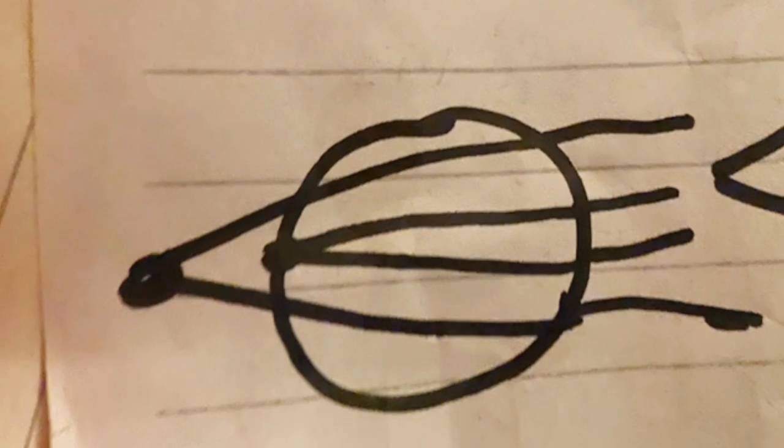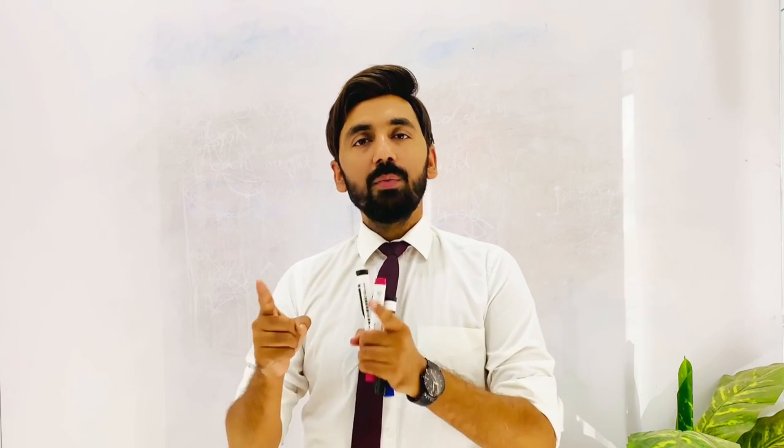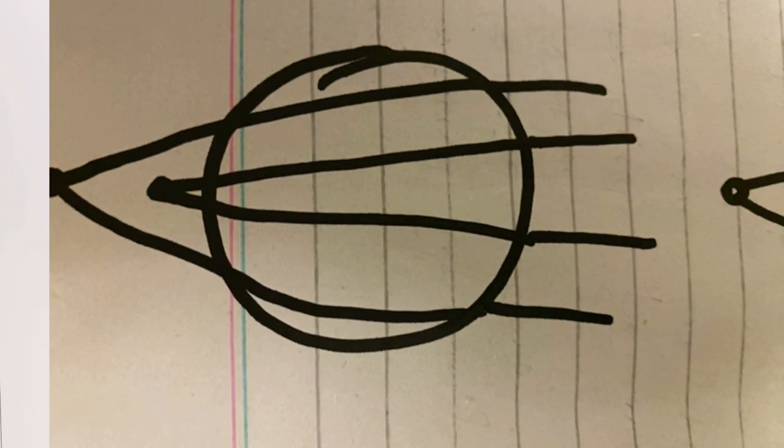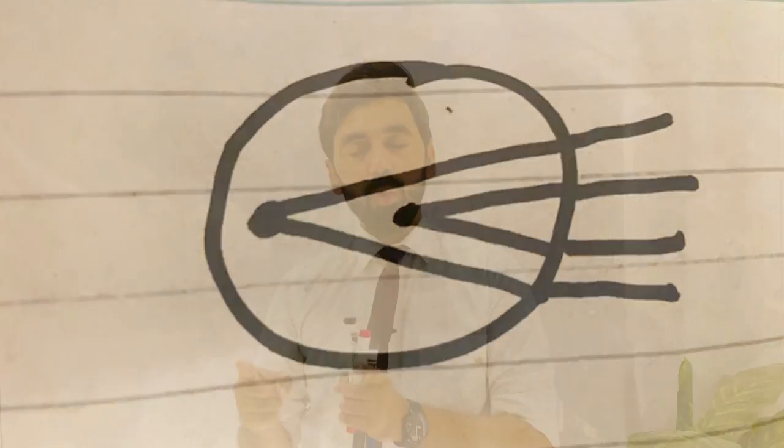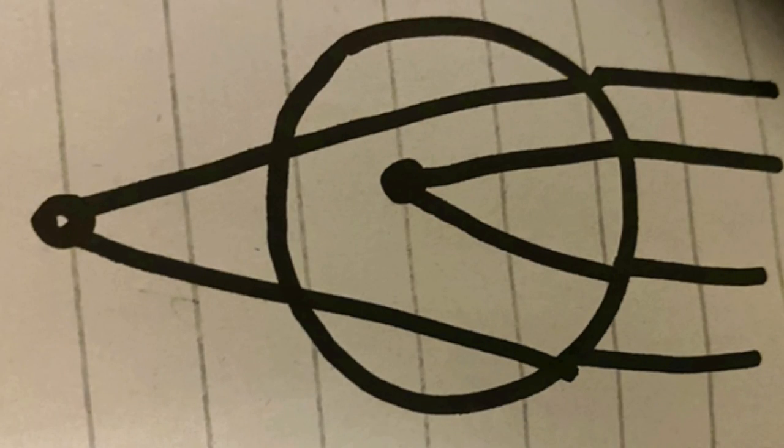In compound hyperopic astigmatism, both focal points are focused behind the retina at different positions. In compound myopic astigmatism, both focal points are focused in front of the retina at different locations. In mixed astigmatism, one focal point is formed in front of the retina and the other is formed behind the retina.